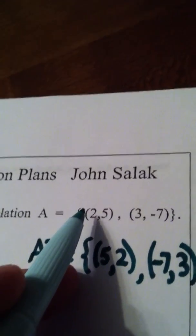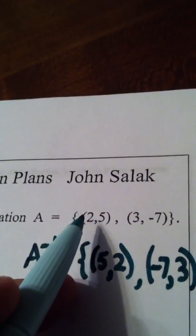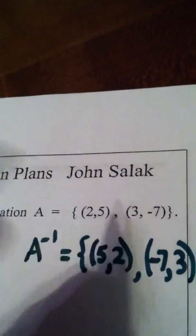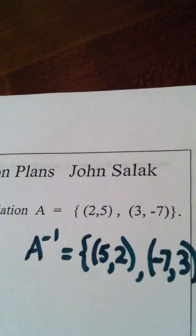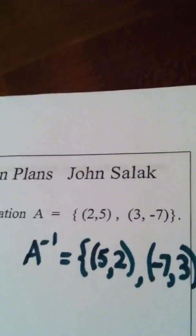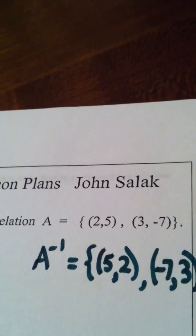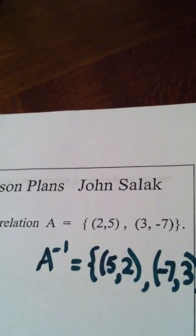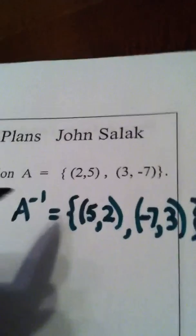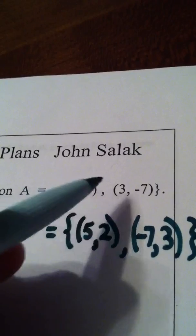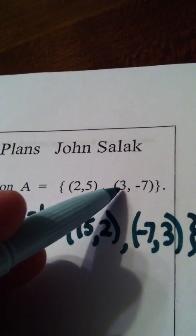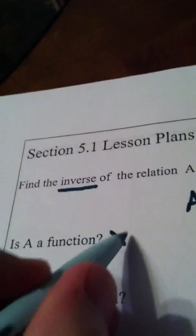Remember to decide if something is a function, you apply the vertical line test. And the vertical line test says, basically, a vertical line can never cross a graph more than once, which means an X value should never repeat. Well, two appears one time and three appears one time. So, is A a function? Yes.